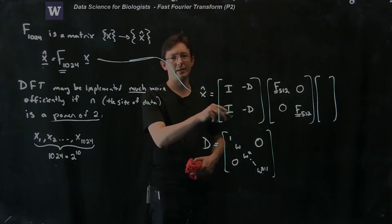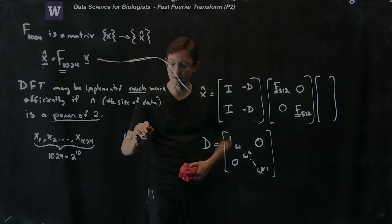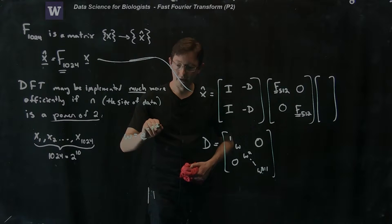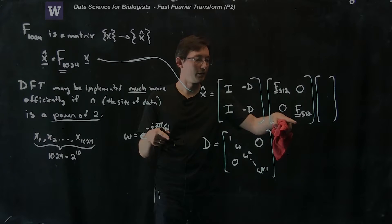Omega is that basic frequency we talked about, omega equals e to the minus i 2 pi divided by n. So divided by 1024.